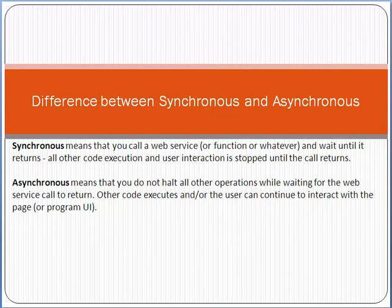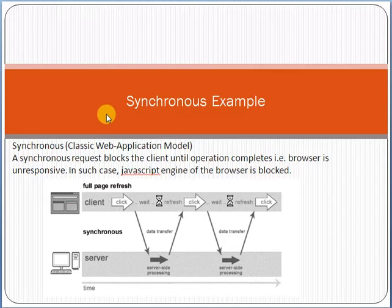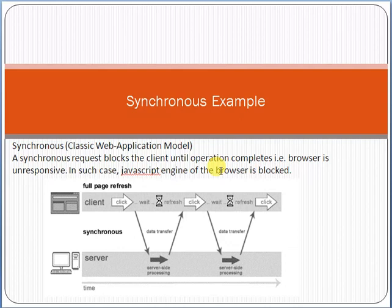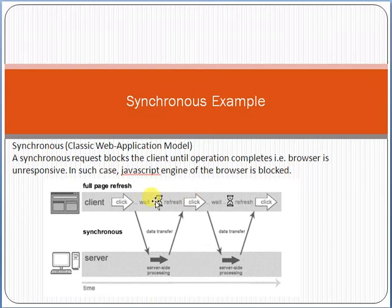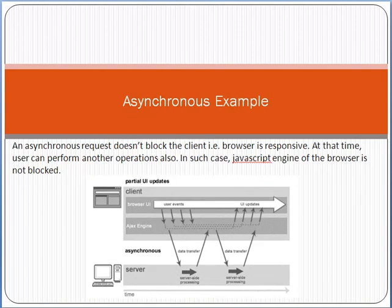Here is a simple example of synchronous. In a synchronous request, it blocks the client. For example, you open a browser, open a website, and click on some option. In a synchronous request, the browser is unresponsive — the JavaScript engine of the browser is blocked. So once you click an option, the server processes your request, and until you get the response back from the server, you will be in a waiting stage.